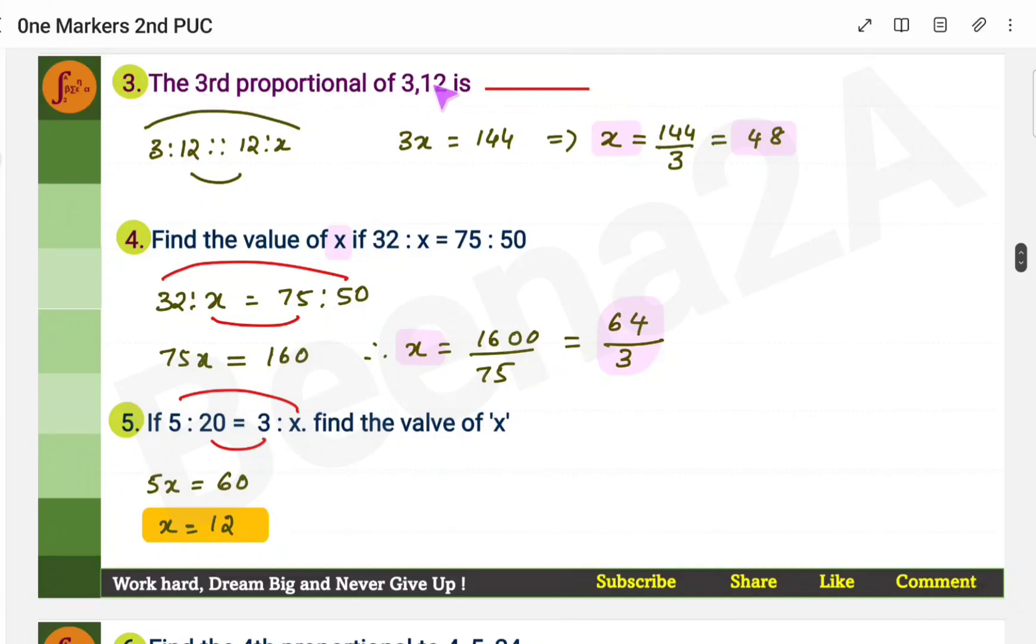Another one, third proportional of 3 and 12. So 3, 12, 12, now you find the value of x. So 3 into x is equal to 12 into 12, 144. 3x is 144, thereby x is 48.